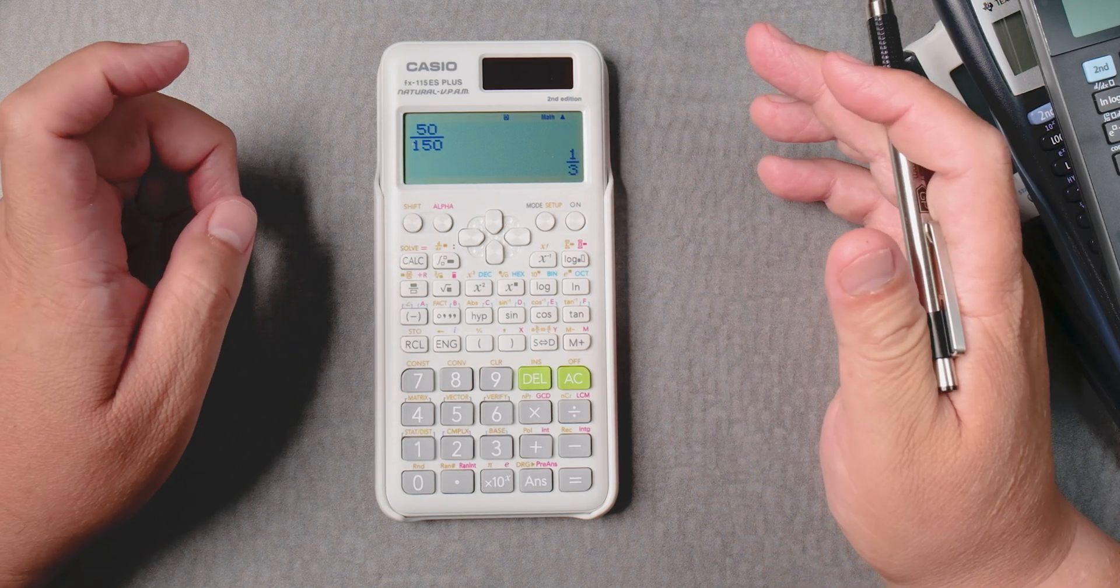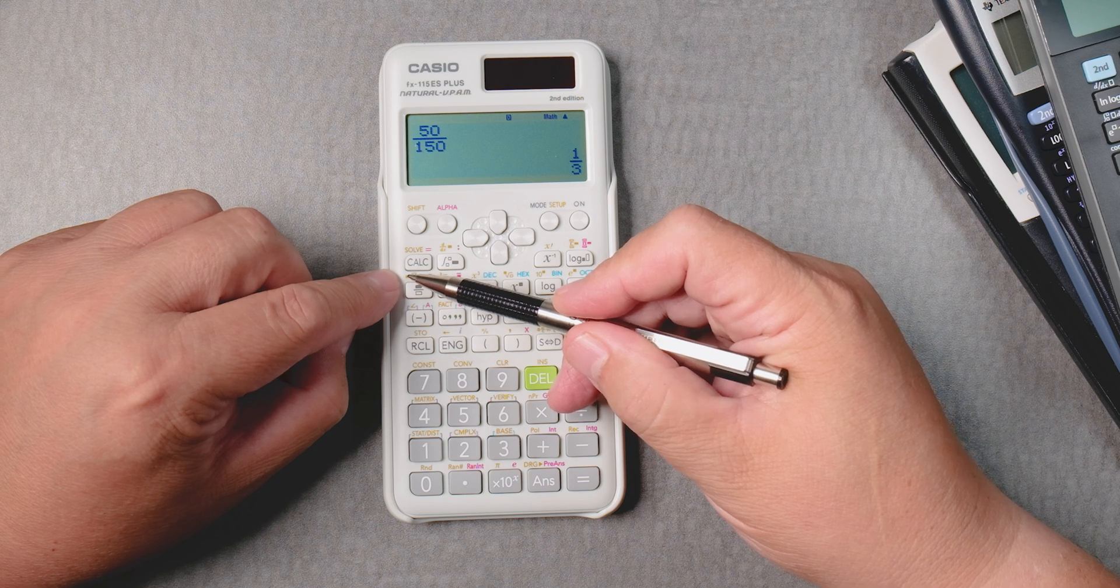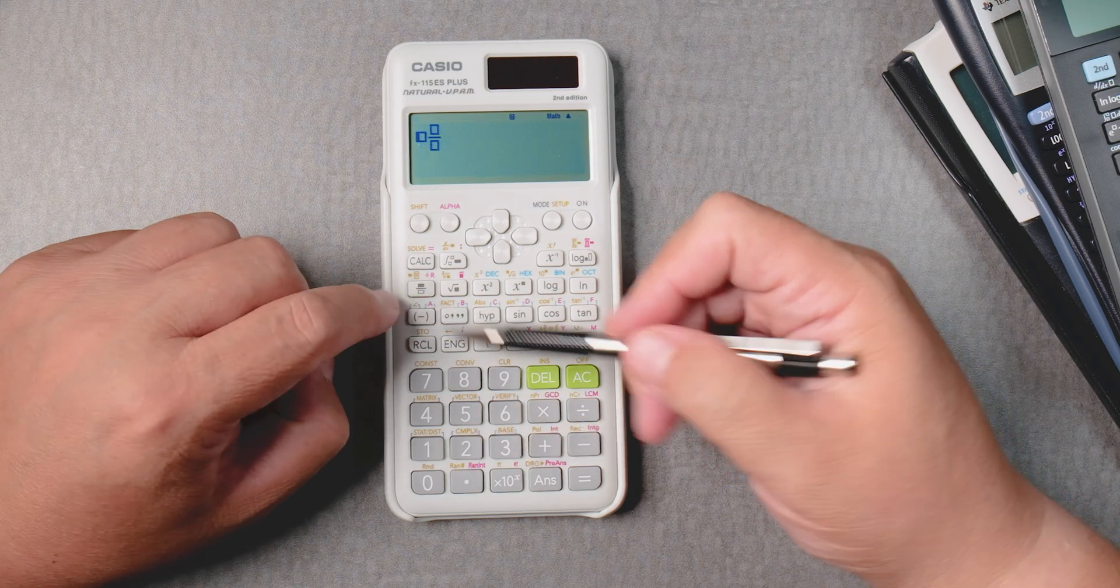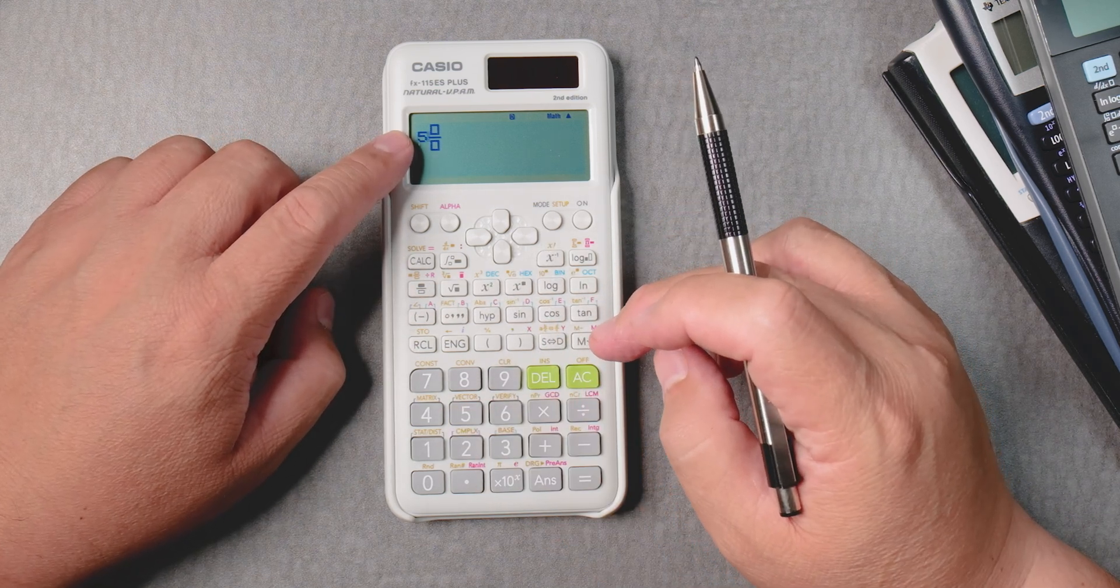Let's say I want a mixed number now. Under here, under the fraction button, there's one that has three boxes. So shift, fraction button, now you can type 5. Let's say 5 and a quarter plus 3 over 8.